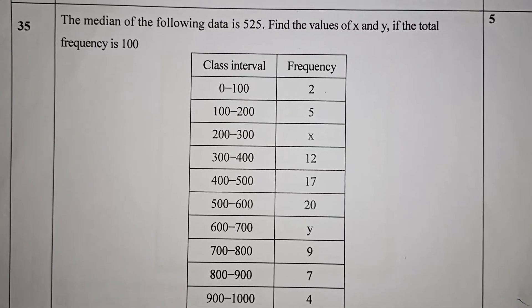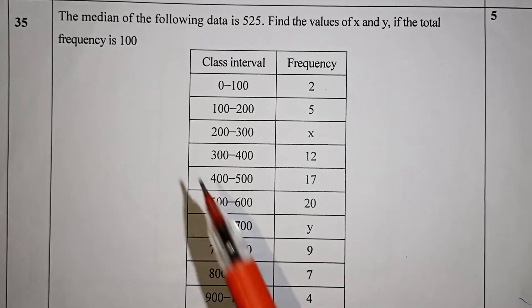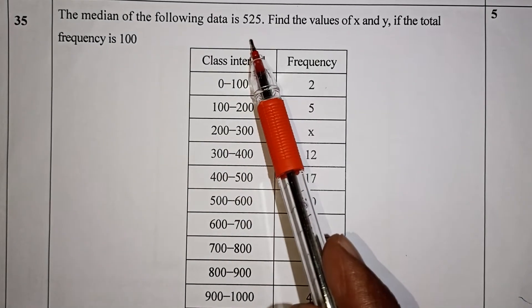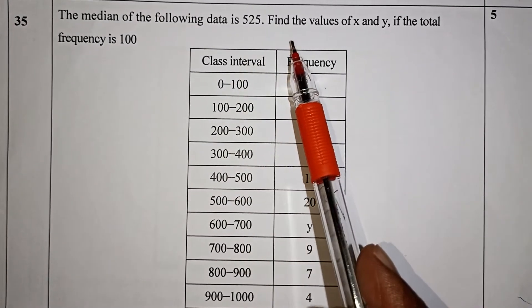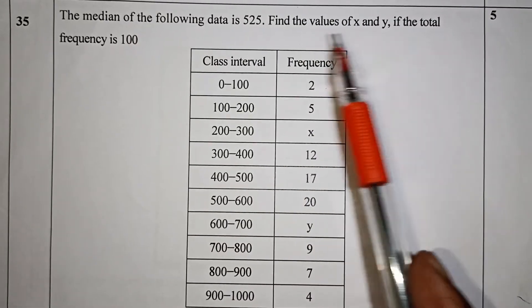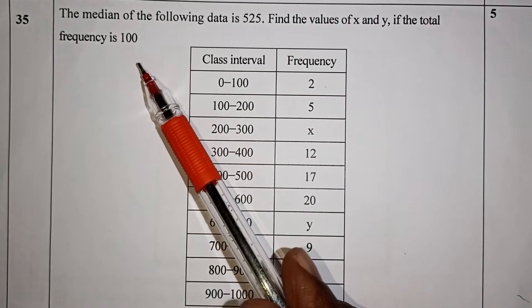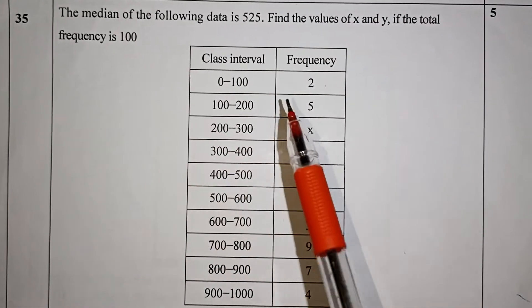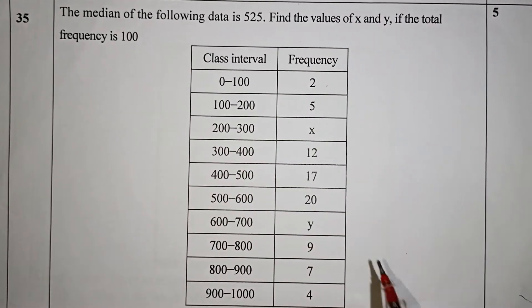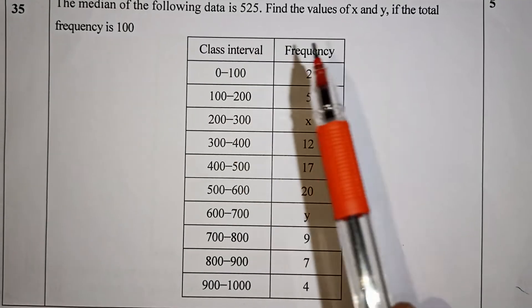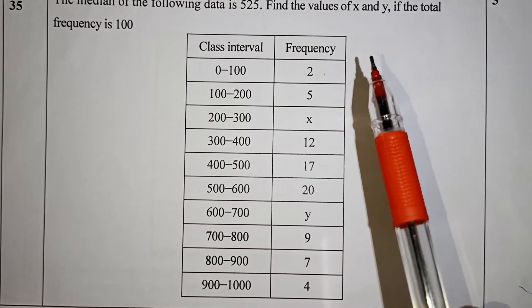The median of the following data is 525. Find the value of x and y, if the total frequency is 100. We have a table with class interval and frequency.